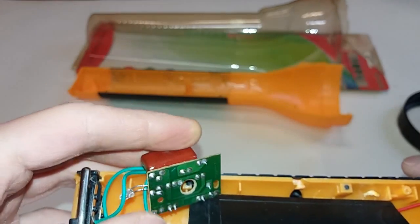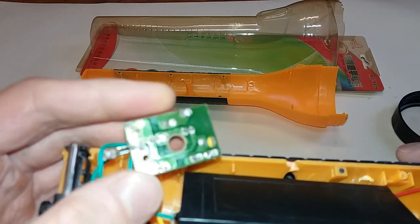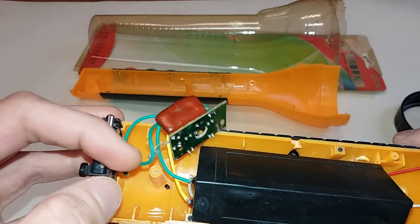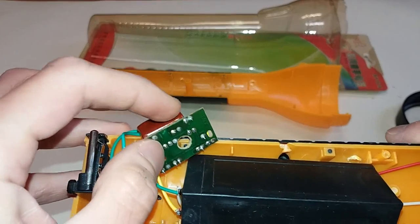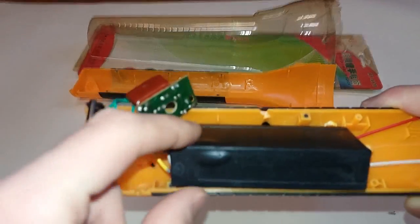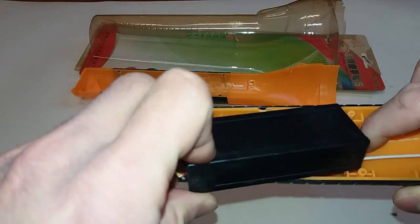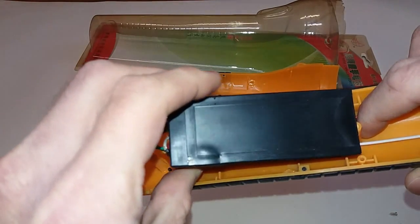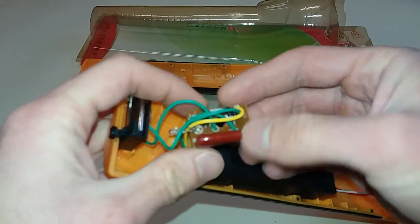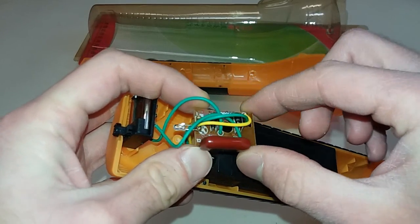So when this capacitor accidentally goes short, there is absolutely nothing to limit the current. So you basically put the mains voltage through the bridge rectifier and directly into the battery, and this may actually explain why this battery is partly molten. Another problem is that there is absolutely no fuse, no fusible resistor.